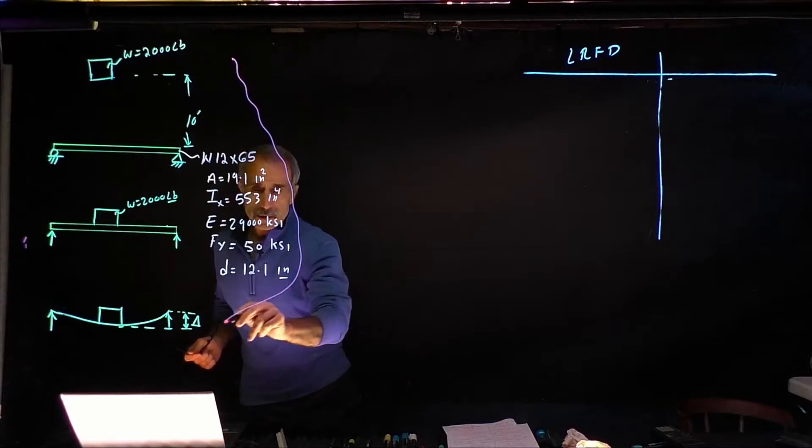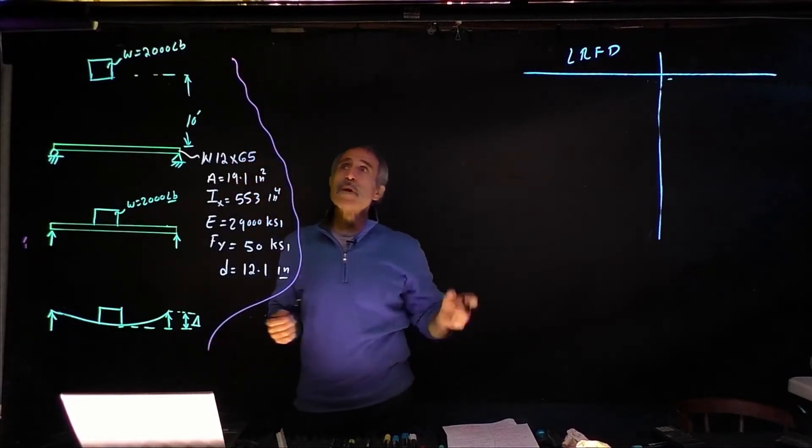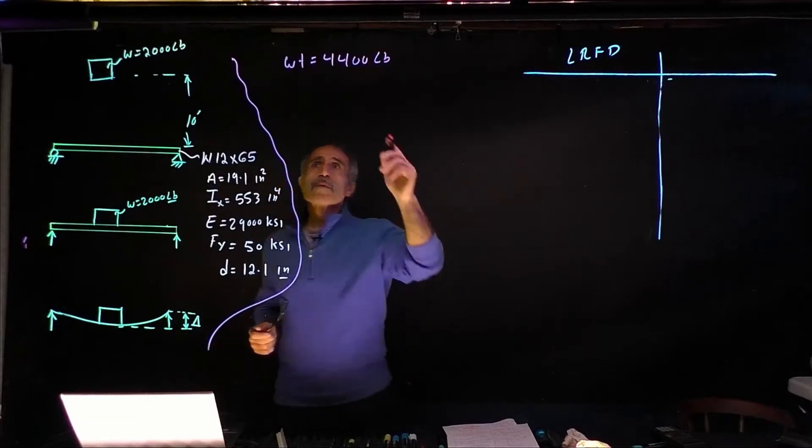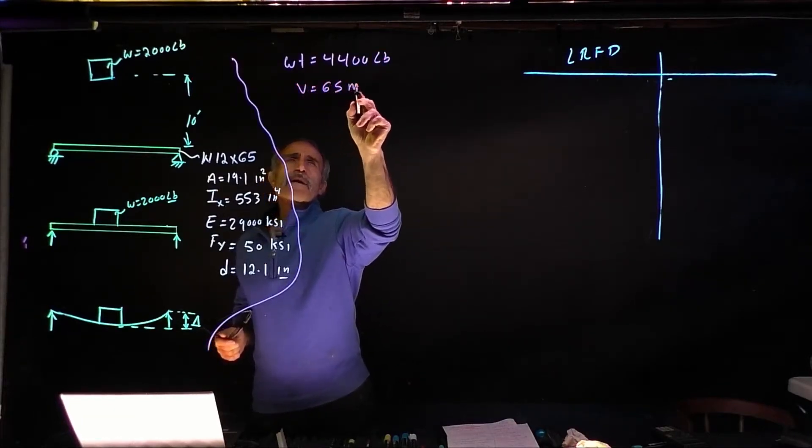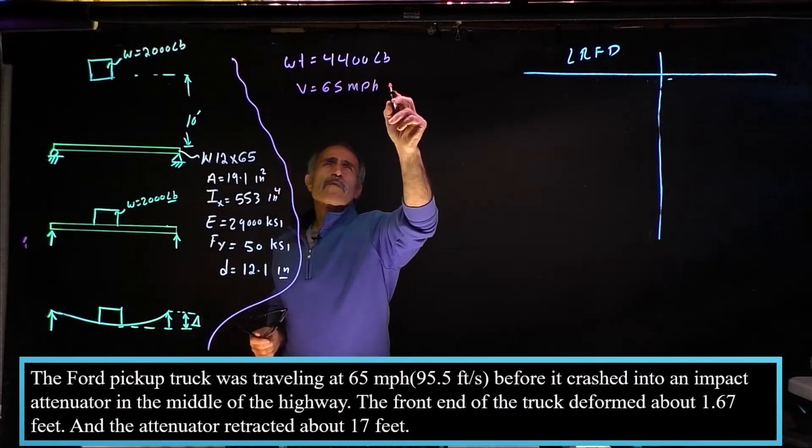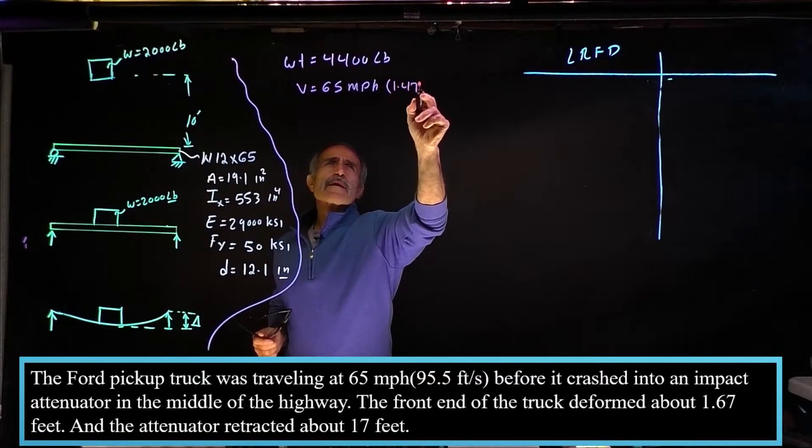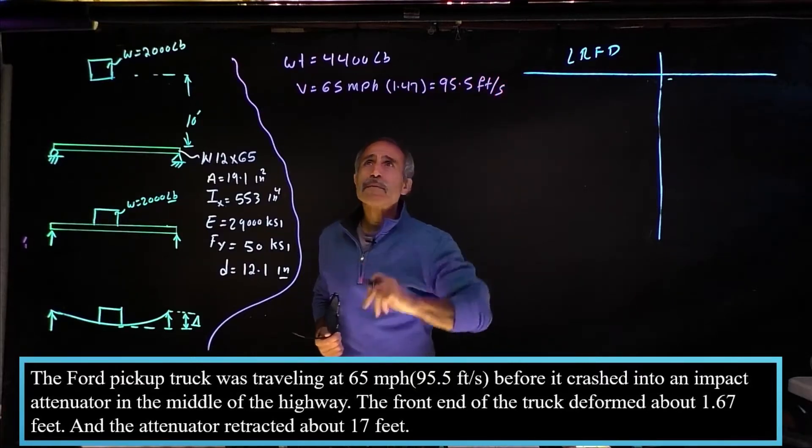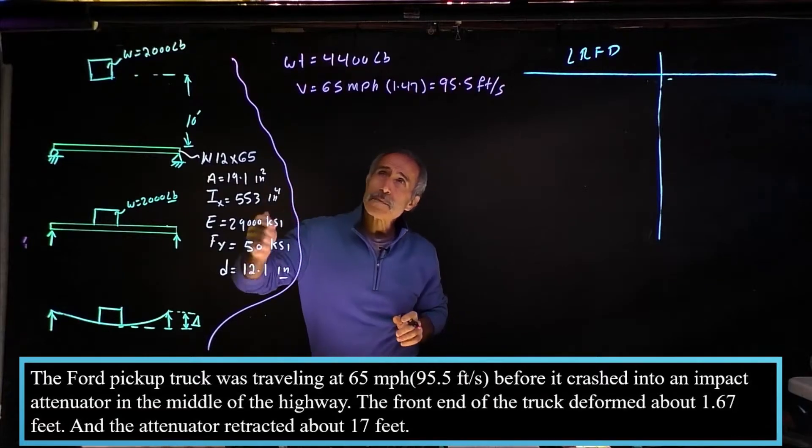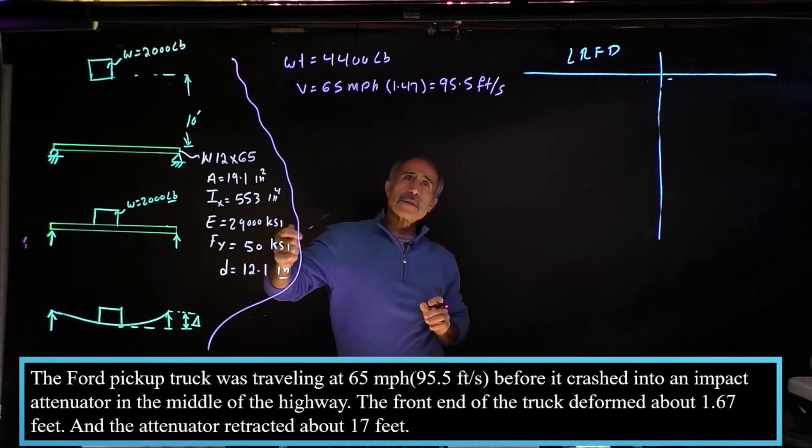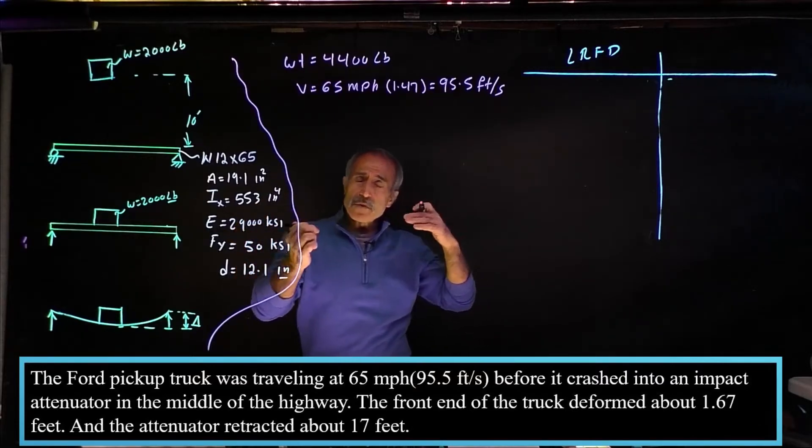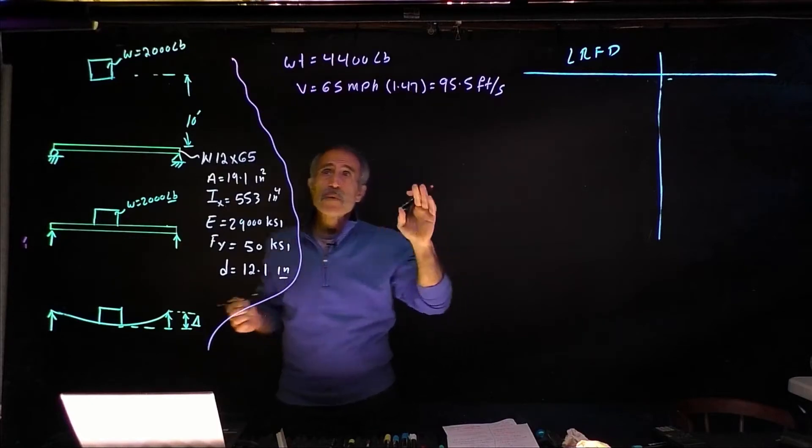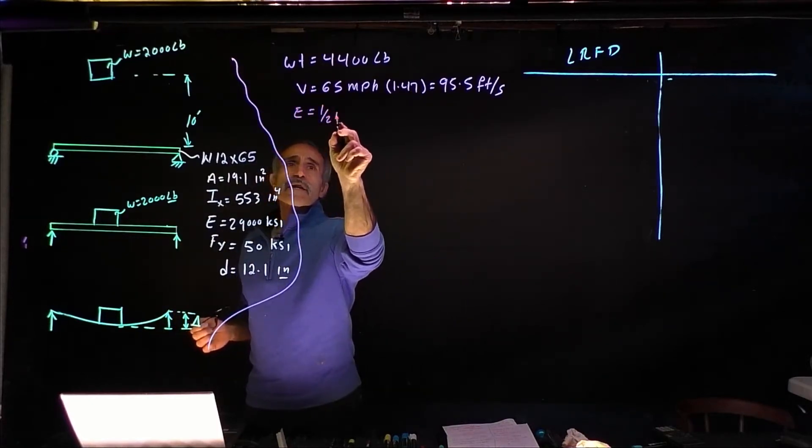Let's do it here. So the Ford pickup truck, if you google it, the weight was 4,400 pounds going at a velocity of 65 miles per hour. If we multiply that by 1.47 that makes it 95.5 feet per second. So the vehicle was 4,400 pounds traveling at 95.5 feet per second, and the driver told me he looked up, it was too late, and hit the impact attenuator at that speed. We know the energy from physics is equal to one half mv squared.